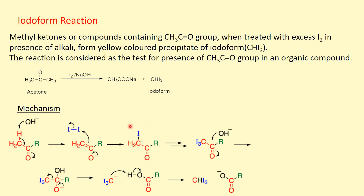Again the hydroxyl ion takes the H⁺ from the CH2 group and forms the negative charge on carbon. Again this carbon gets attached with another iodine atom, and after the third step, this carbon gets attached with three iodine atoms, giving CI3–C(=O)–R. Now the hydroxyl ion attacks the carbonyl carbon atom and the pi bond is shifted to oxygen. Finally, CI3⁻ is removed and the remaining part is –C(=O)–R with –OH. This CI3⁻ takes H⁺ to form iodoform CHI3, and the carboxylate anion remains as the salt of the carboxylic acid.